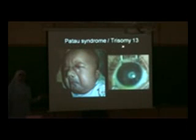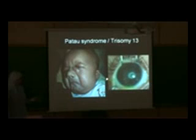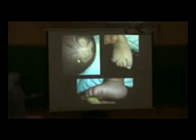Patau syndrome with trisomy 13 may be presented with congenital cataract. As I see here, the small girl has cataract and there is a left hand problem here. There may be loss of part of the iris, and this is called coloboma of the iris.